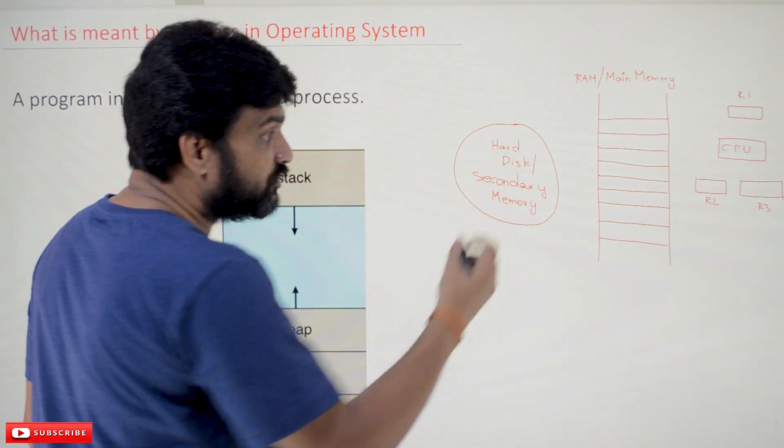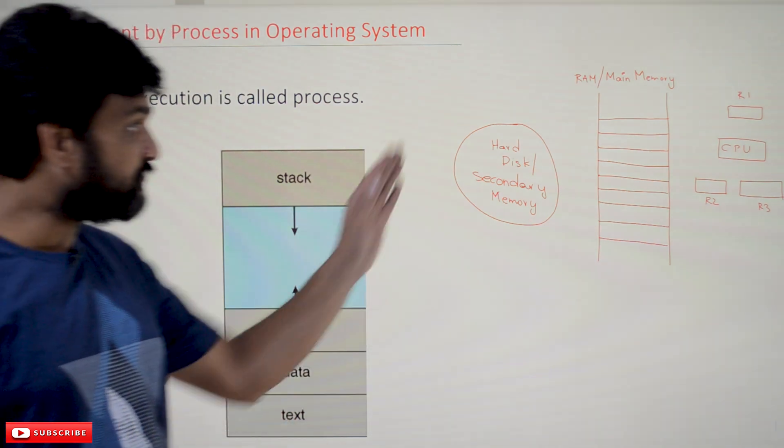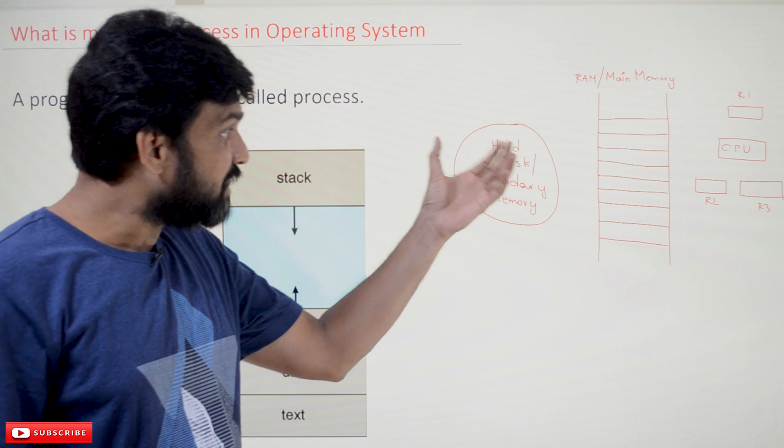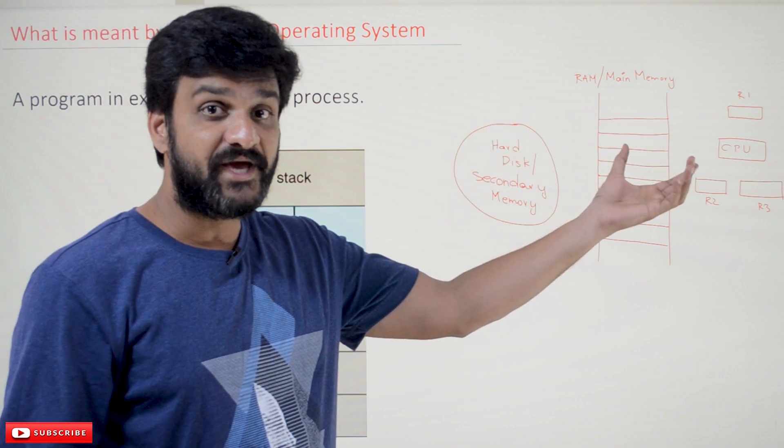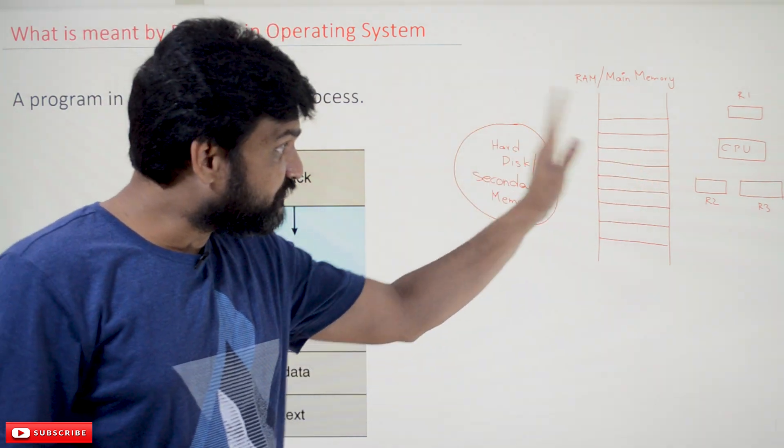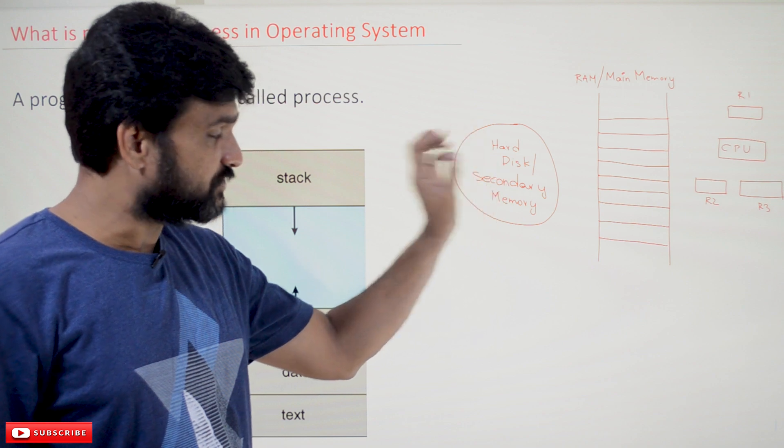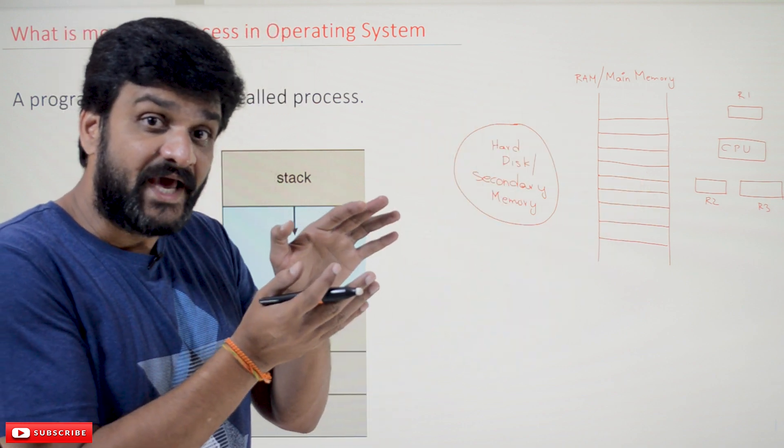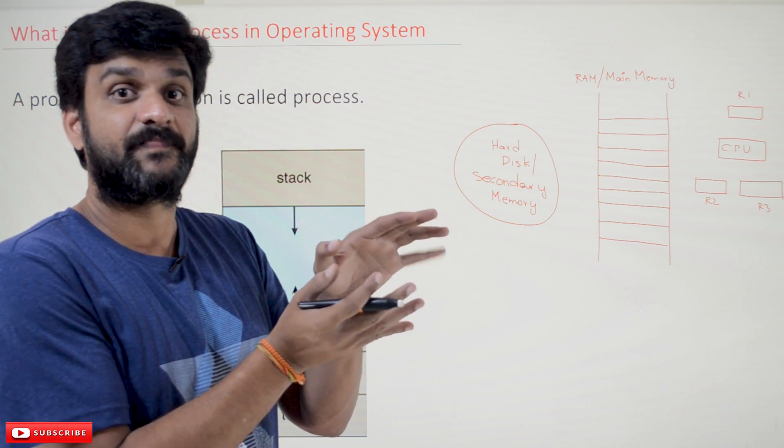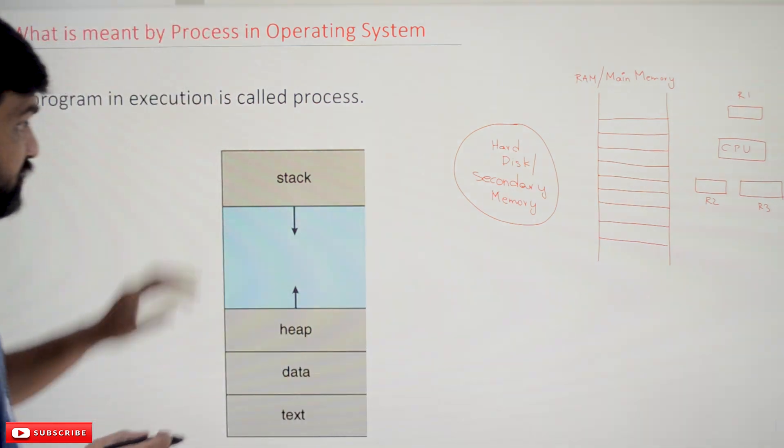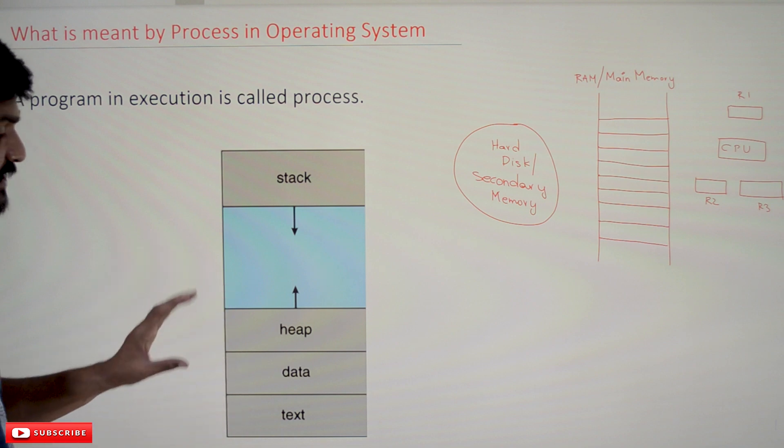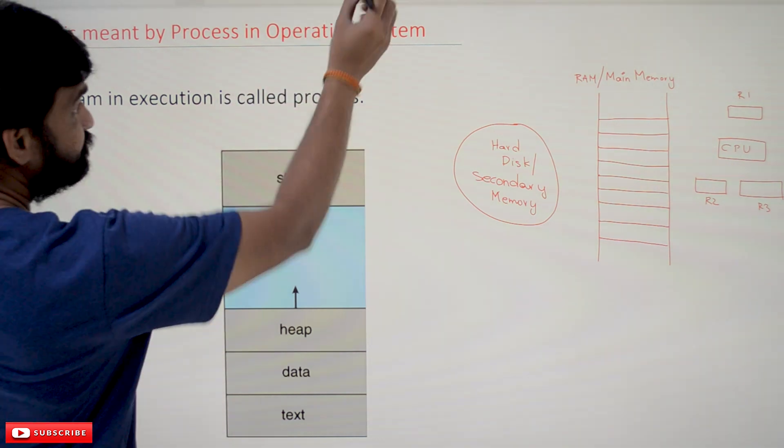Before shifting from hard disk to main memory, that program will be allocated with some memory. This is how the process will look like. In this diagram, this is what the process is.